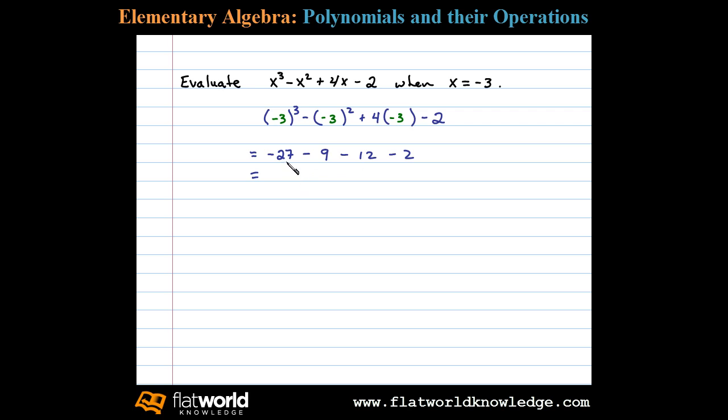Now working the operations from left to right, we have negative 27 minus 9 is negative 36. Negative 36 minus 12 is negative 48, and then finally negative 48 minus 2 leaves us with negative 50.